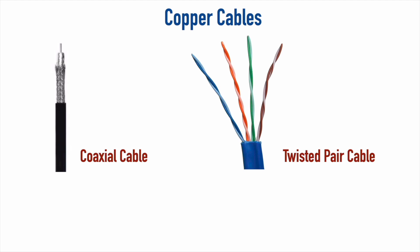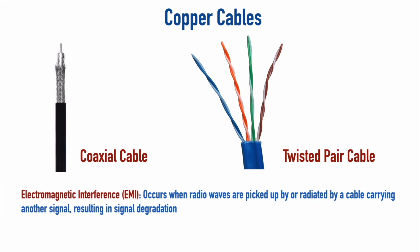First let's focus on coaxial cable. If you look at the tip of that cable you can see a wire coming out. That little wire inside the cable is surrounded by insulation so it's not touching the outer metal braiding. We have two conductors — the inner wire and the braiding. This design helps prevent EMI, electromagnetic interference, which is what happens when one transmission gets carried over into another transmission.